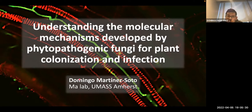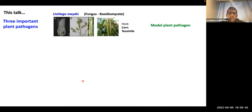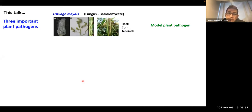In this talk I will show you information about three important plant pathogens. The first one is Ustilago maydis — a fungus which induces infection in corn and teosinte. Teosinte is the putative ancestor of corn, and this fungus is an important model plant pathogen.